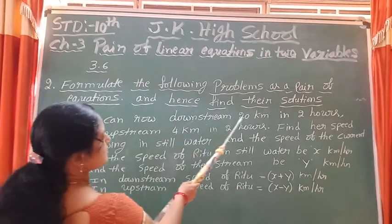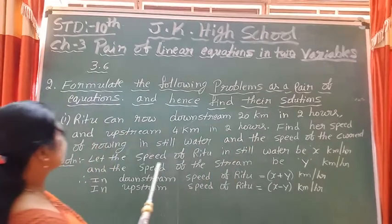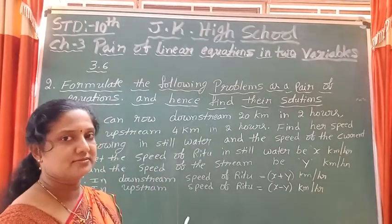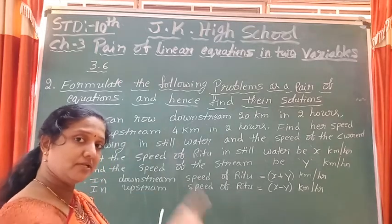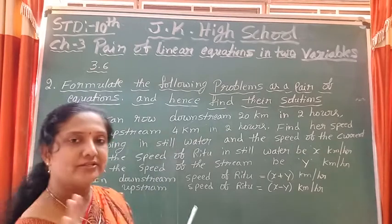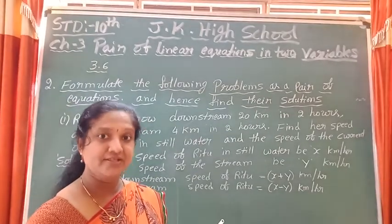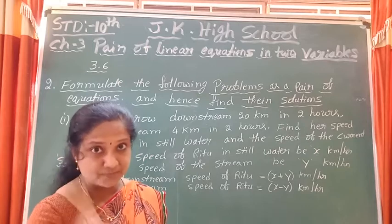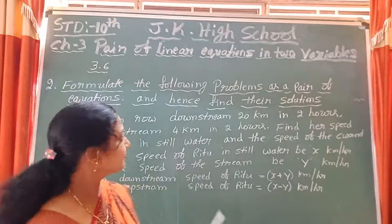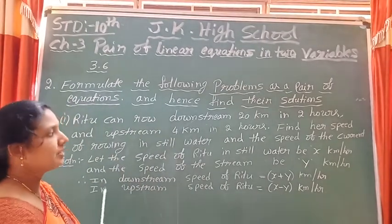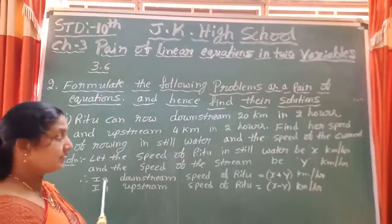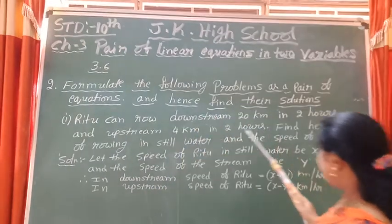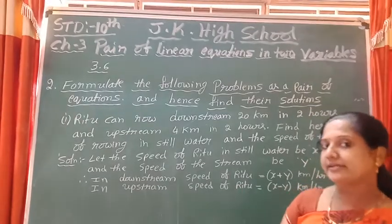Ritu can row downstream 20 km in 2 hours and upstream 4 km in 2 hours. She can cover 20 km downstream within 2 hours, but going upstream she covers only 4 km in 2 hours. Find the speed of rowing in still water and the speed of the current.